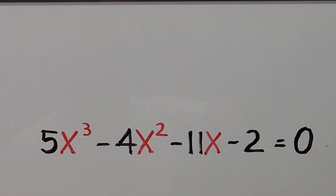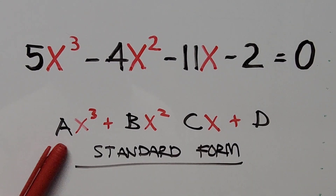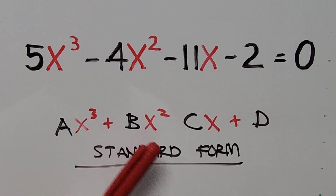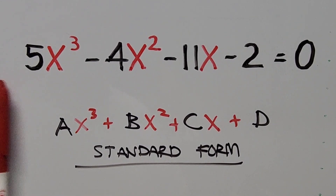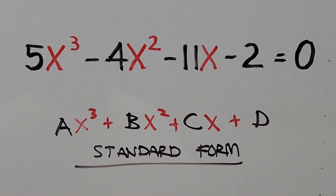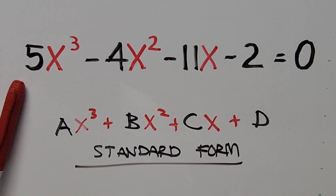First, let's make sure that the cubic equation is in its standard form, that is ax³ + bx² + cx + d. Looking back to our equation, this confirms that our equation is in its standard form, so let's go ahead with the first step. Since our leading coefficient is not 1 but 5,